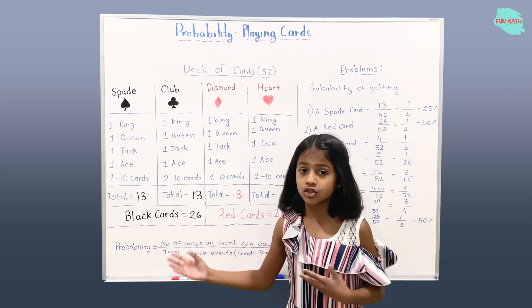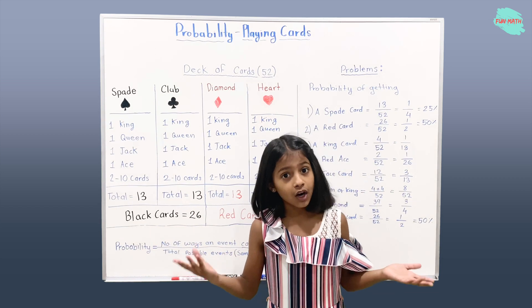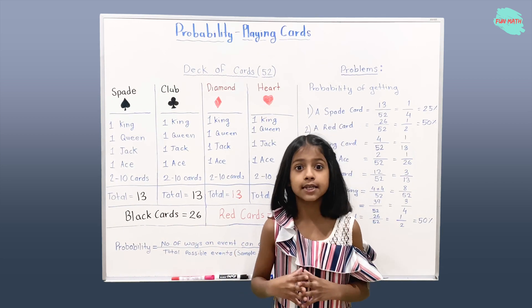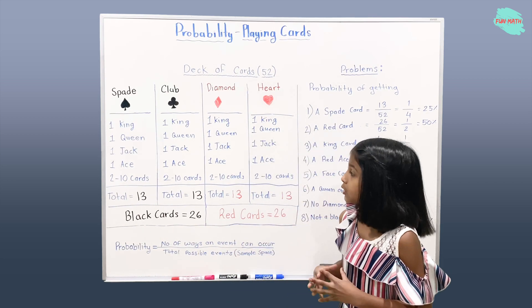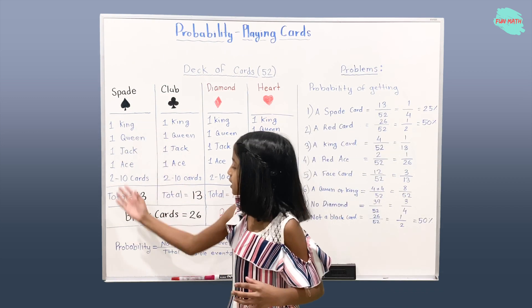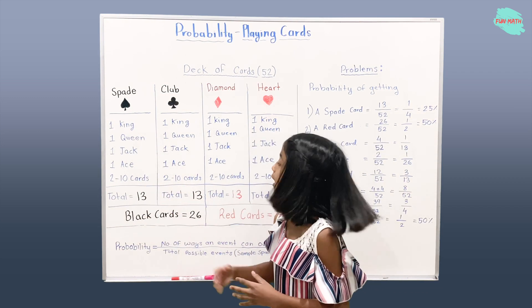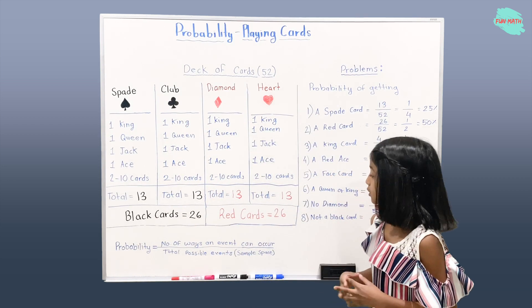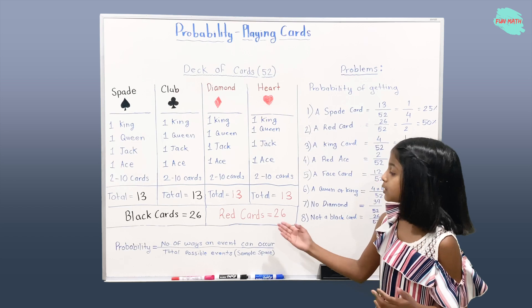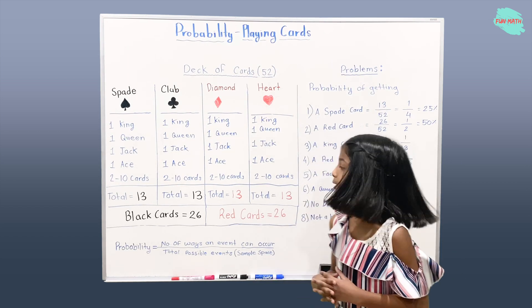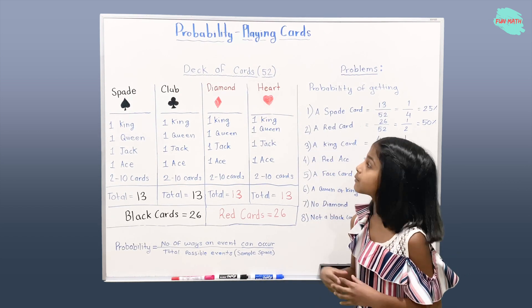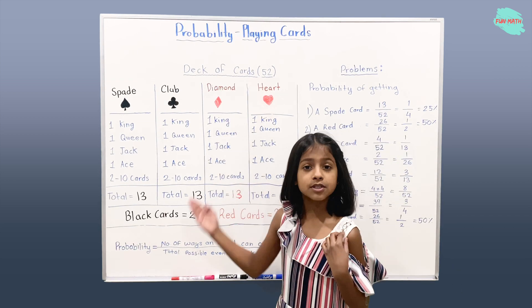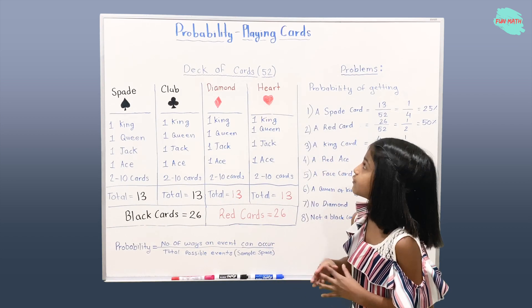How many black cards do we have in the deck of cards? We have 26 total black cards — 13 from Spade Suit and 13 from Club Suit. How many red cards do we have from the deck of cards? We have 26 — 13 from Diamond Suit and another 13 from Heart Suit.